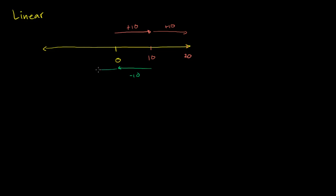Moving that distance to the left again gets us to negative 10, and again to negative 20. The general idea is: however many times we move that distance to the right, we're adding that multiple of 10. If we do it twice, we're adding 2 times 10. And this works for whole numbers as well as fractions.